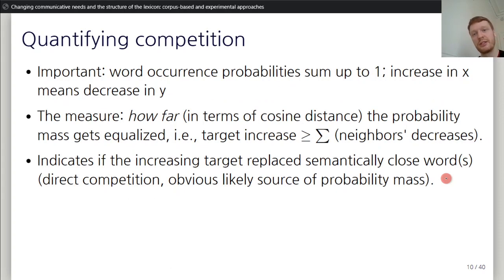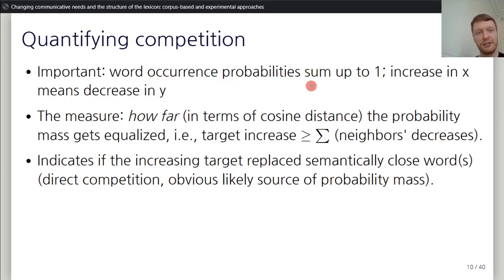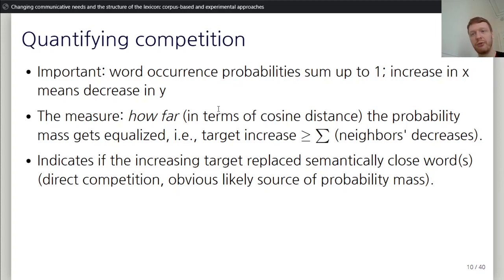An important aspect of the competition model is that in any corpus, all word probabilities sum to one. This automatically means that if one frequency goes up, another must go down. You can then measure where this probability mass comes from — how far in terms of cosine distance between word vectors you have to go before you see that probability mass equalized. This indicates whether there's competition — something very close by gets replaced, like with airplane — or whether there is no clear competition.